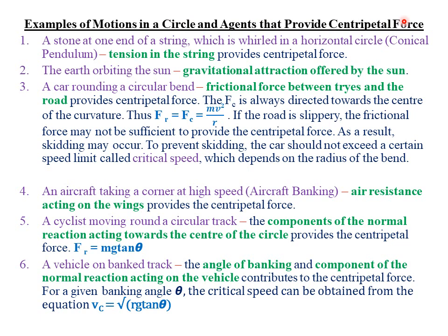Today we're looking at examples of motion in a circle and the agents that provide the centripetal force in each case. The first example of uniform circular motion: when we have a stone at one end of a string whirled in a horizontal circle — basically what we call the conical pendulum — the agent that provides the centripetal force is the tension in that particular string.